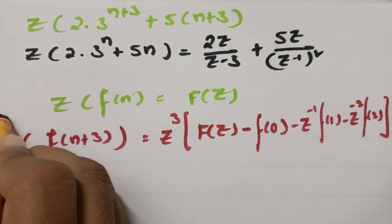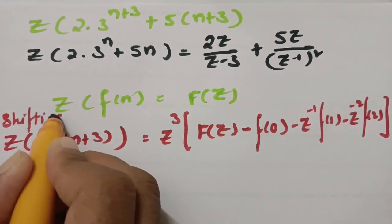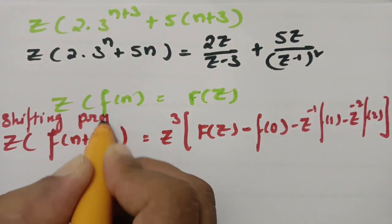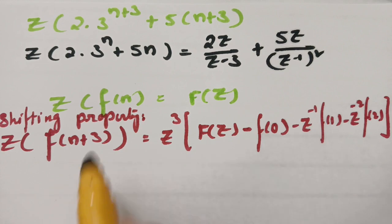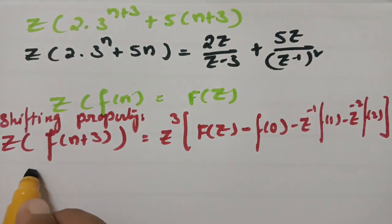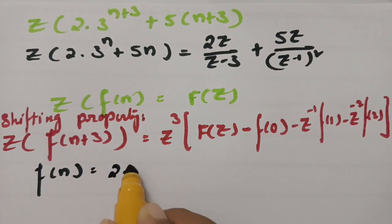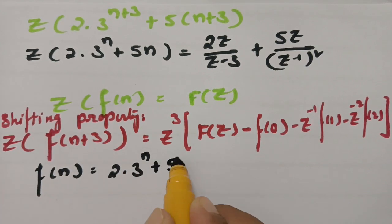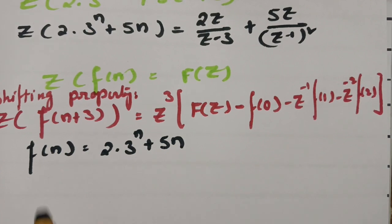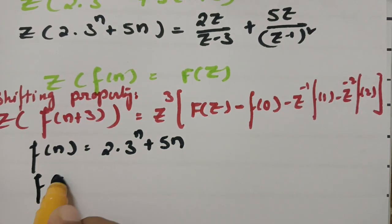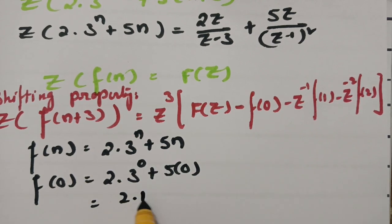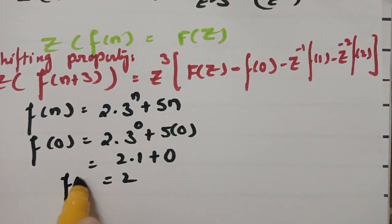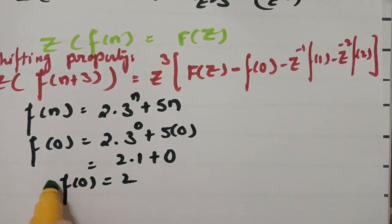From the question, f(n) = 2·3^n + 5n. We need f(0): substituting n=0 gives 2·3^0 + 5·0 = 2·1 + 0 = 2. So f(0) = 2.